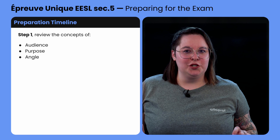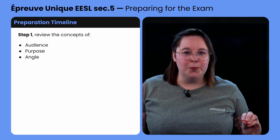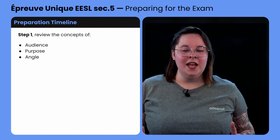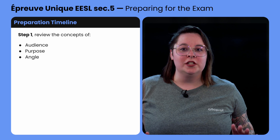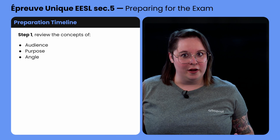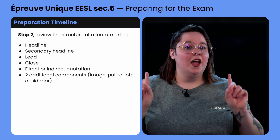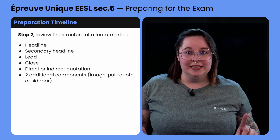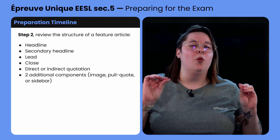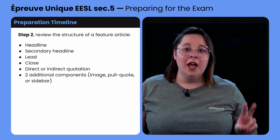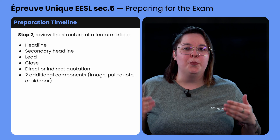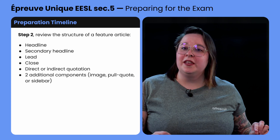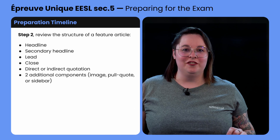First, you should make sure you understand the concepts of audience, purpose, and angle, which will guide your writing later on. Then, make sure you know all the mandatory components of the structure of a feature article, which are a catchy headline, a secondary headline, an interesting lead, a close, at least one direct or indirect quotation, and two additional components like an image, a pull quote, or a sidebar. All these components are explained in more depth in some of our other videos, so be sure to watch those if needed.